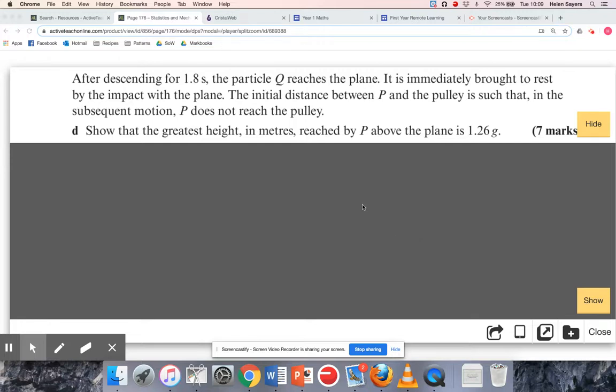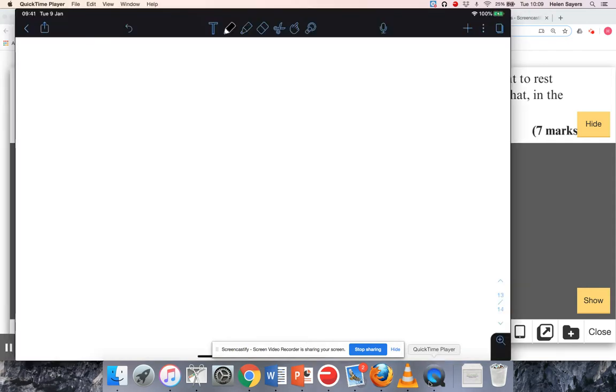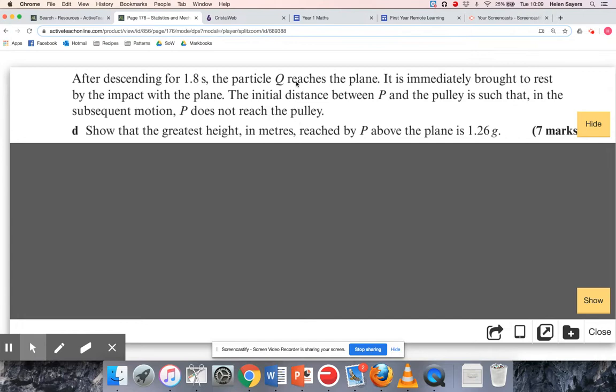Okay, so we're carrying on with question two from exercise 10f in the first year textbook. This part of the question is worth seven marks on its own, so we're doing this as a separate video because it's quite long. Let's remind ourselves what this question was about. We had two particles hanging over a pulley, particle P and particle Q. We weren't given the mass of P but we've worked out previously that the value of Q is... Q is falling because Q has the greater mass, and it reaches the plane, basically the floor, and then it stops moving.